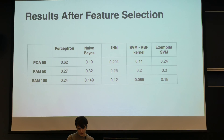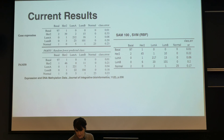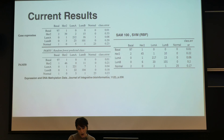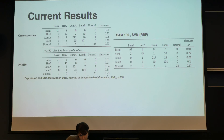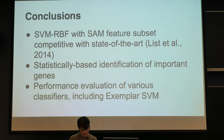Here you can see our results for each classifier across the feature selection methods. We got a really strong result using our statistically-selected SAM gene subset with the SVM RBF kernel — a 0.069 error rate. Comparing against the 2014 state-of-the-art paper, we calculated a bootstrap 0.632 error. In each category we are comparable to their gene expression classifier error, and comparing their PAM50 versus our SAM-100, we beat them in one class and are the same or very close in the others.